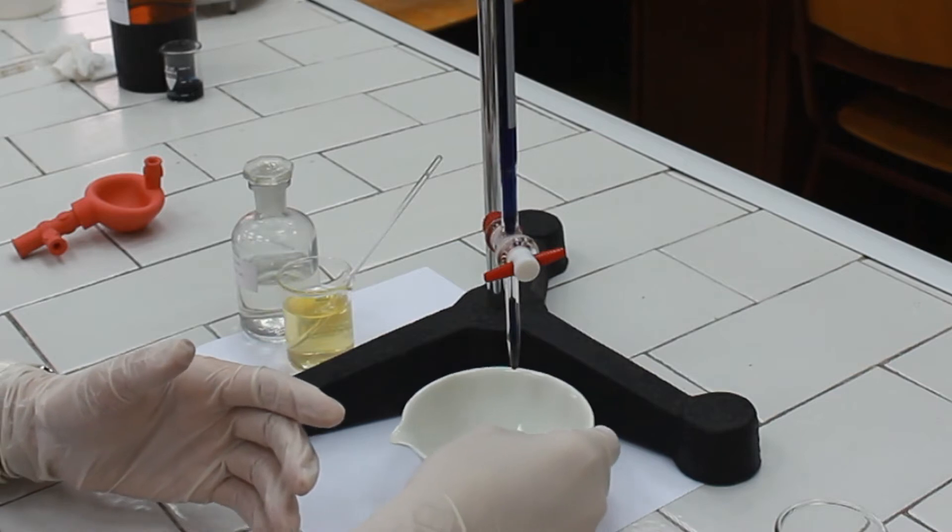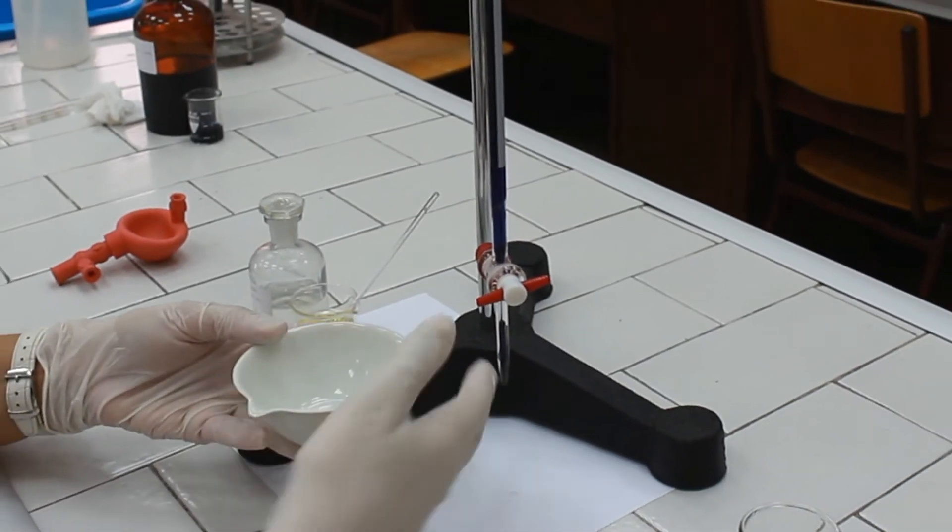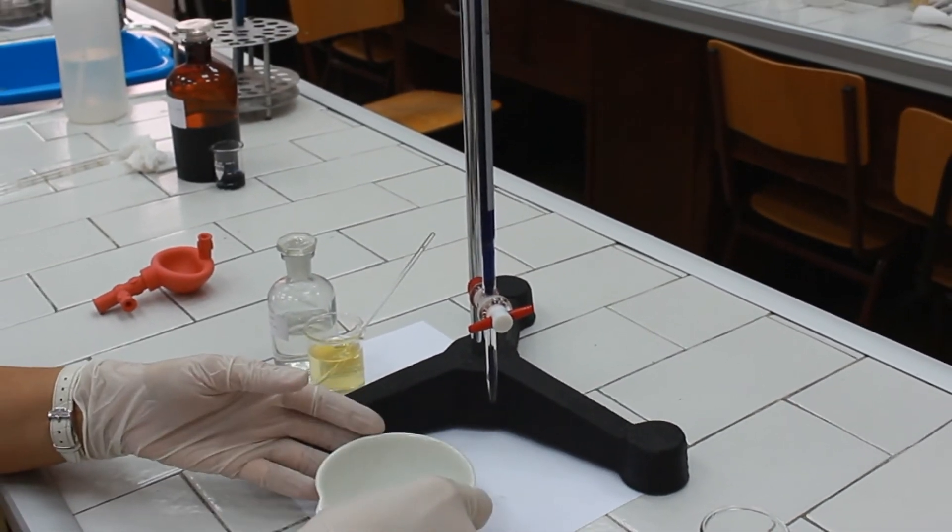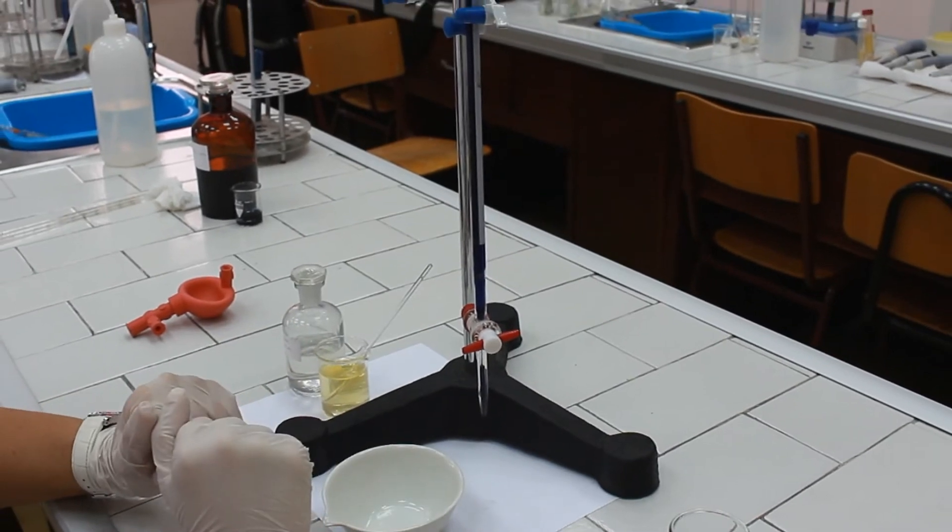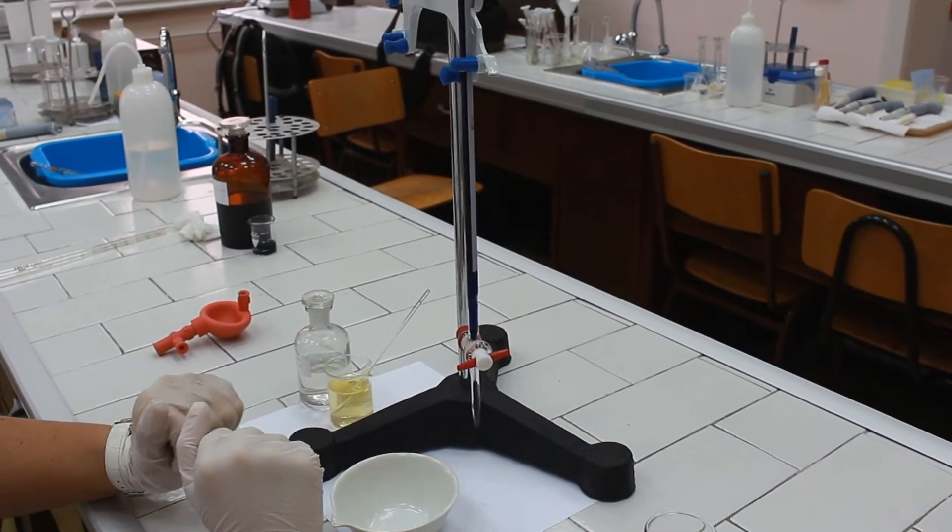For the determination of vitamin C in a urine sample, we need a ceramic dish to which we are going to pipette 2 ml of urine.